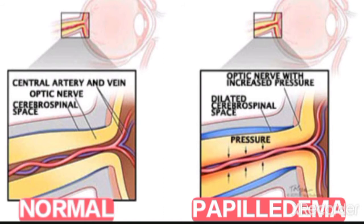Papilledema is secondary to raised intracranial pressure. Passive edema means inflammation is not involved — what is raised is the CSF pressure, which is the intracranial pressure. Nearly always it is bilateral. It is bilateral because when CSF pressure is raised, it will affect both eyes equally — the intracranial pressure is raised on both sides, so papilledema is bilateral.